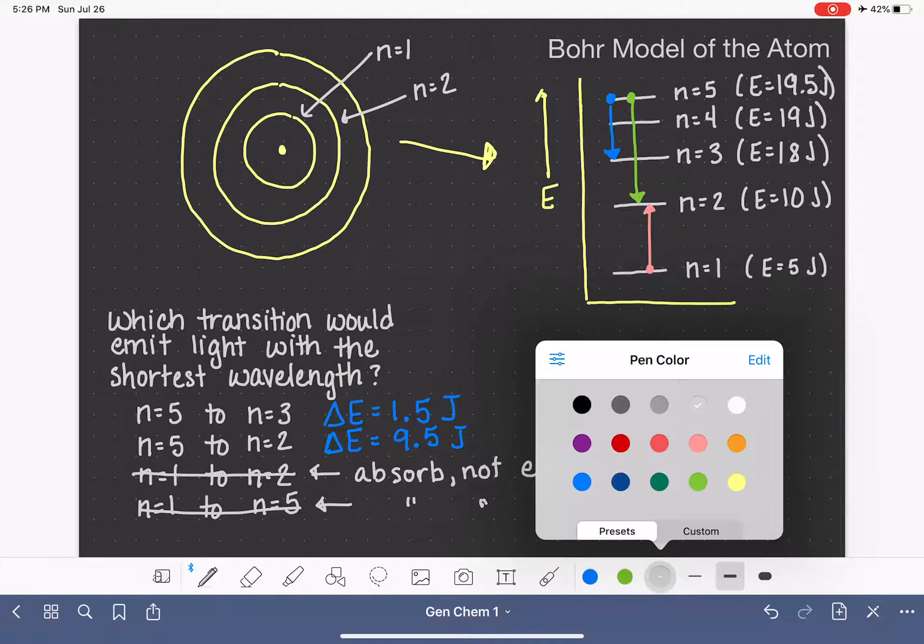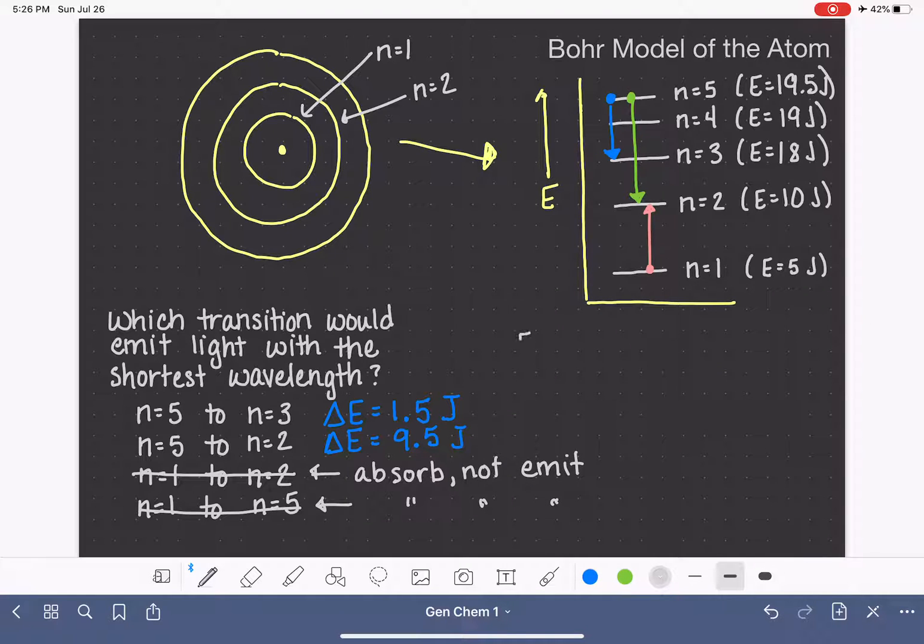So we've narrowed it down to 2. We know that the first transition from 5 to 3 is going to give us a photon with 1.5 joules, and the second transition from 5 to 2 gives us a photon with 9.5 joules. The question is asking us which one emits light with the shortest wavelength. So to actually put all this information together, we need to use this equation E equals h nu or E equals hc over lambda. These were equations that I showed you a few videos ago when we first talked about photons.